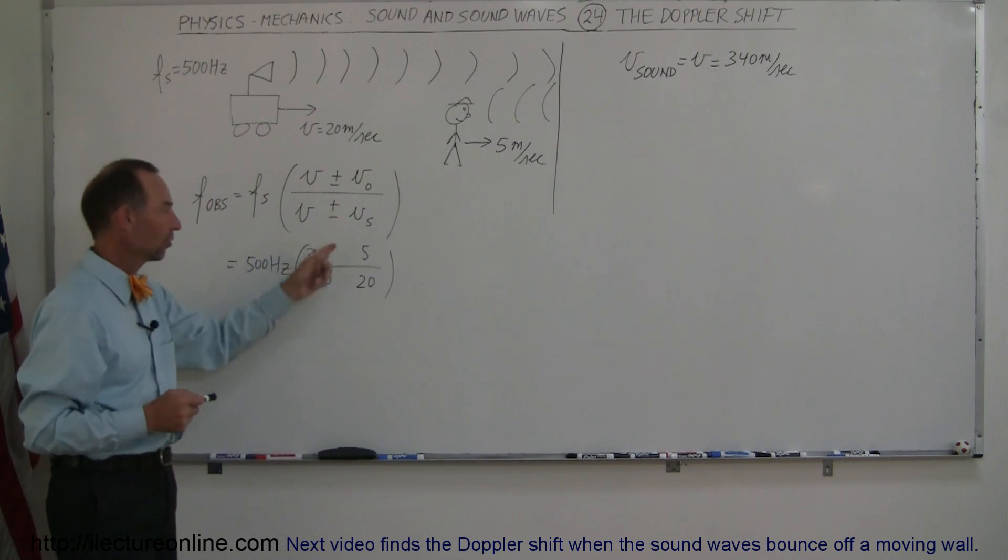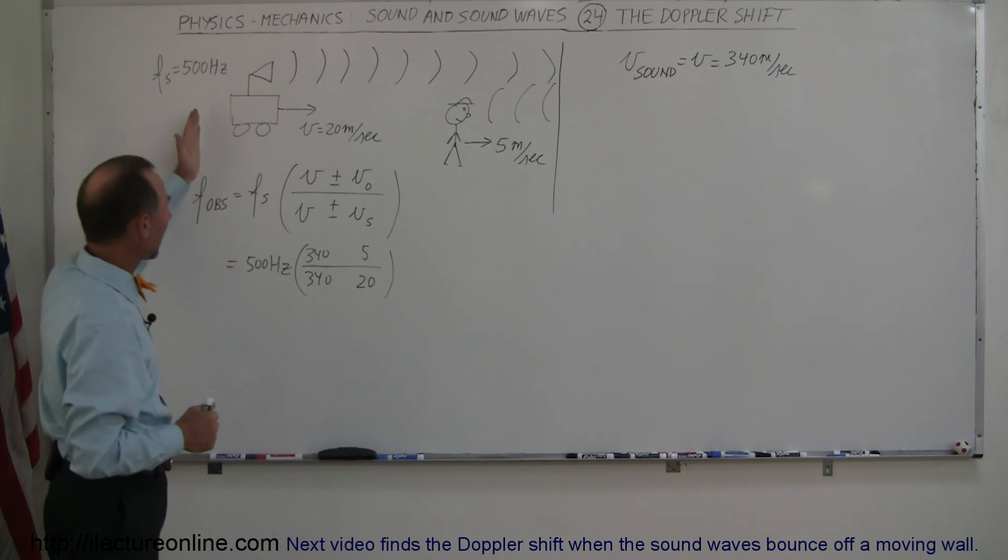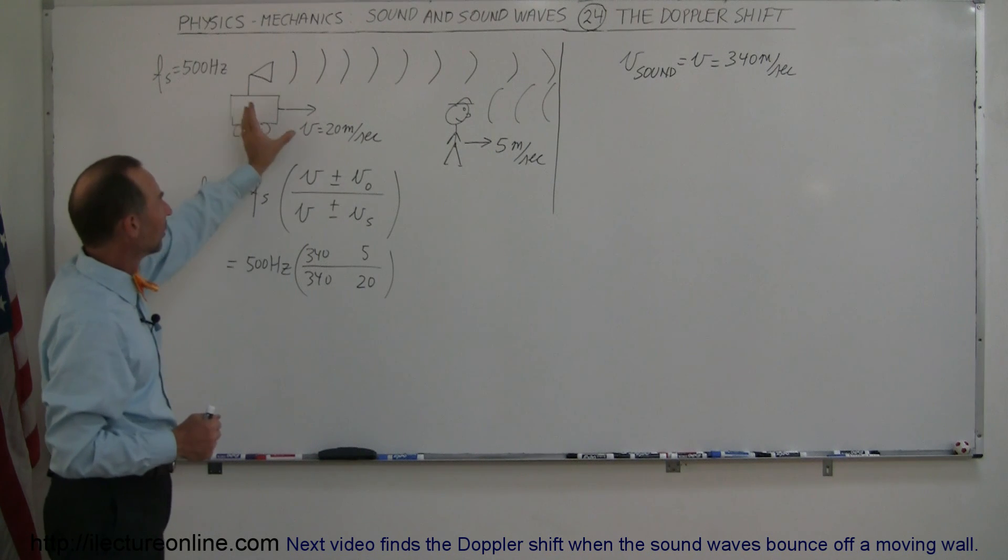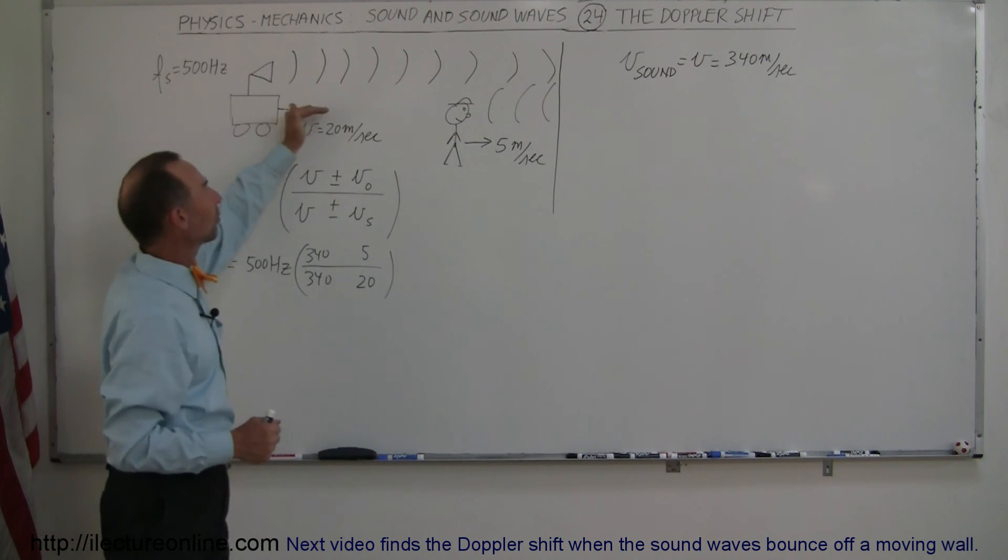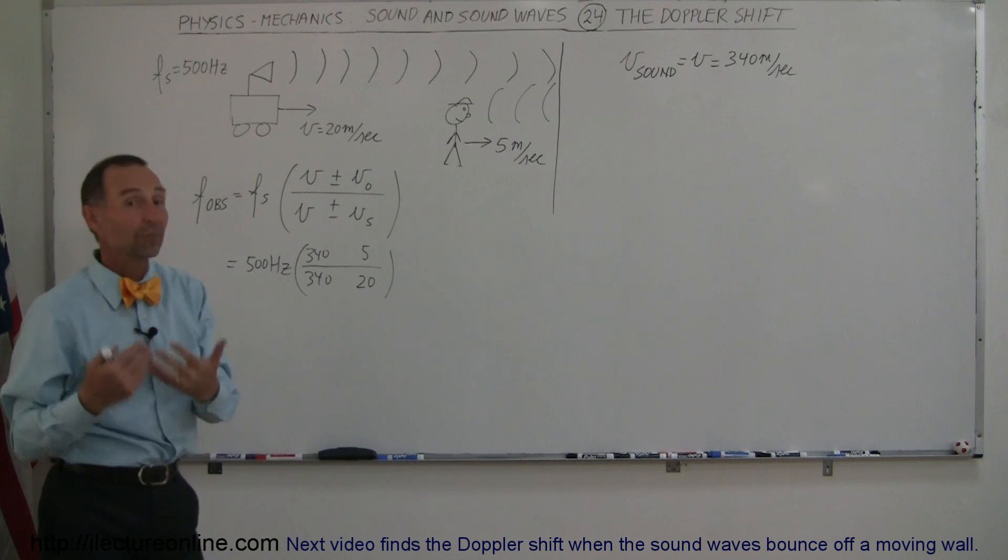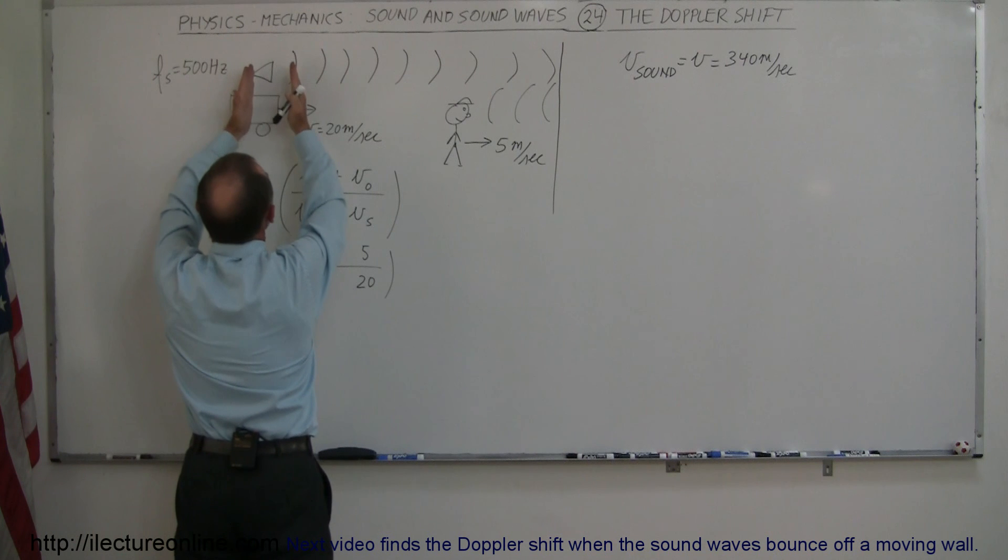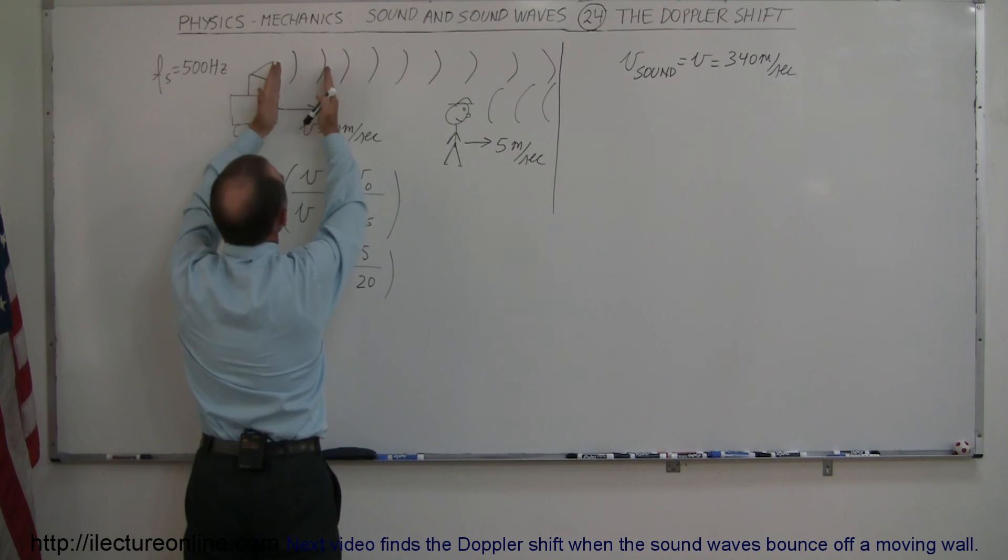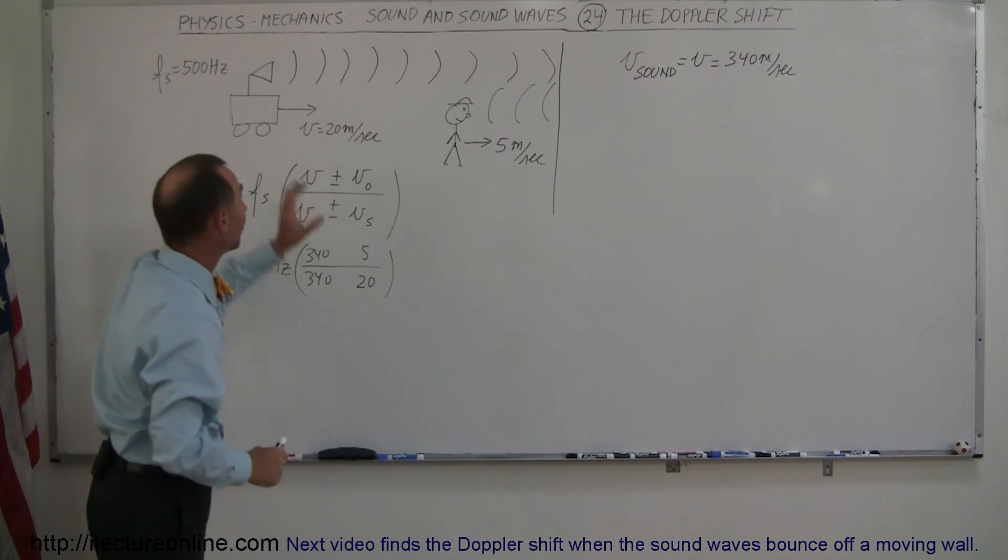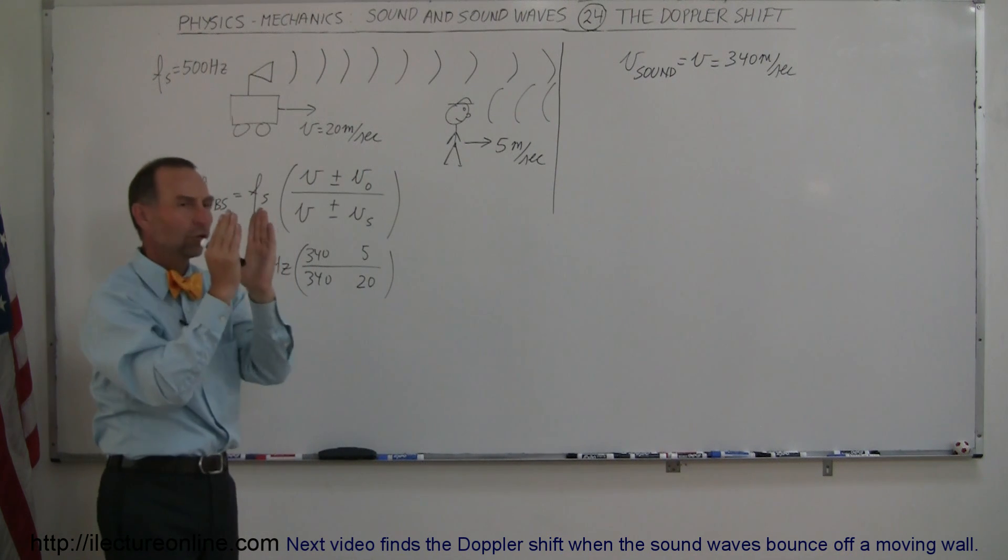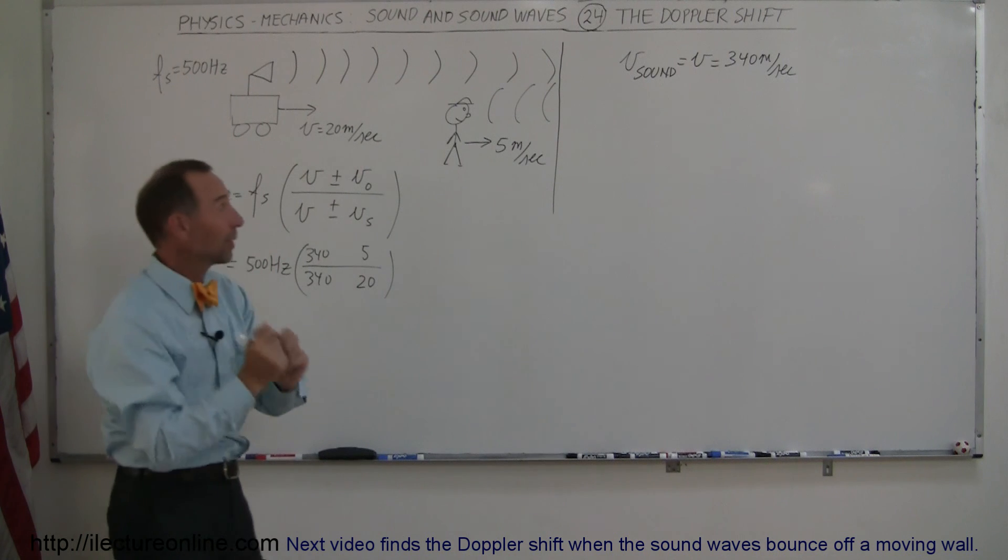Now let's start with the velocity of the source in the denominator. As the source is moving towards the observer, the observer would expect to hear a higher frequency, because what happens is, as the sounds are being made, by the time the next wave is made, the source has moved, causes the waves to be closer together than they otherwise would be, if the source was not moving. So shorter wavelengths means higher frequency.